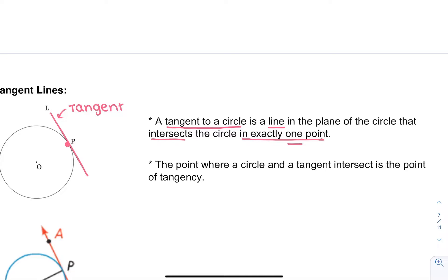The point where a circle and the tangent line intersect, that point P, is called the point of tangency. P is the point of tangency, and remember, there's exactly one of them.